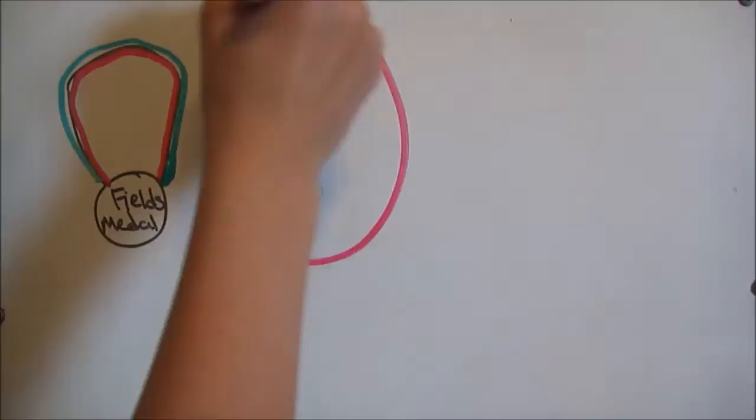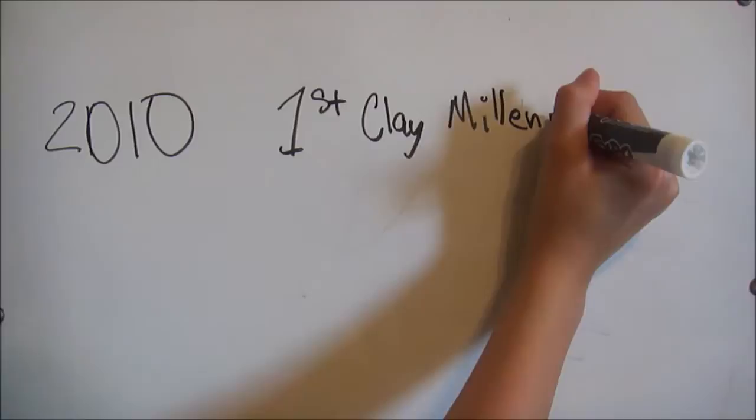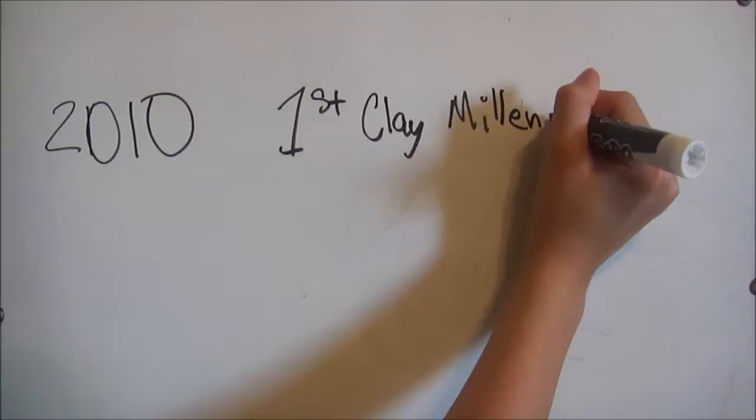Perelman was offered the Fields Medal. He declined, stating, I'm not interested in money or fame. I don't want to be on display like an animal in a zoo. In 2010, it was confirmed that Perelman had met the criteria to receive the first Clay Millennium Prize. It also came along with the prize of $1 million. He declined both again.